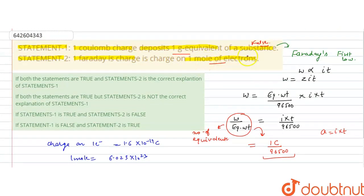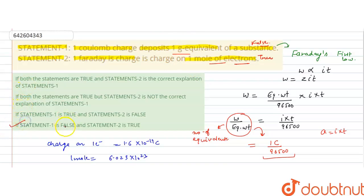So the correct answer to this question is: statement one is false and statement two is true. The correct answer is option D — statement one is false and statement two is true. I hope you understood the solution, thank you.